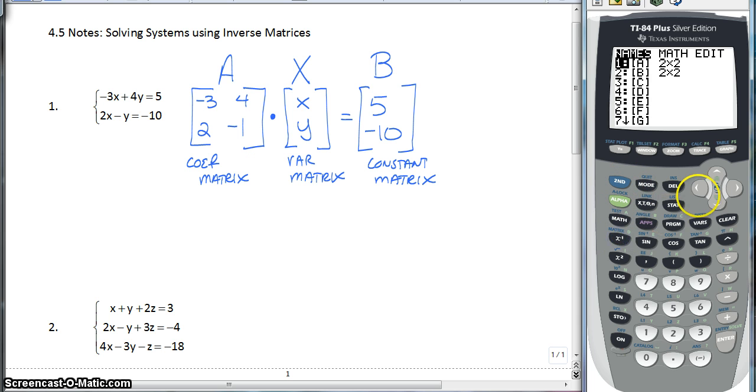And then we're going to go back to the matrix menu. And we're going to go edit matrix B. And that is a 2 by 1. So we have to change the dimensions to 2 by 1. And our constants are 5 and negative 10. And once you have that entered, you quit.